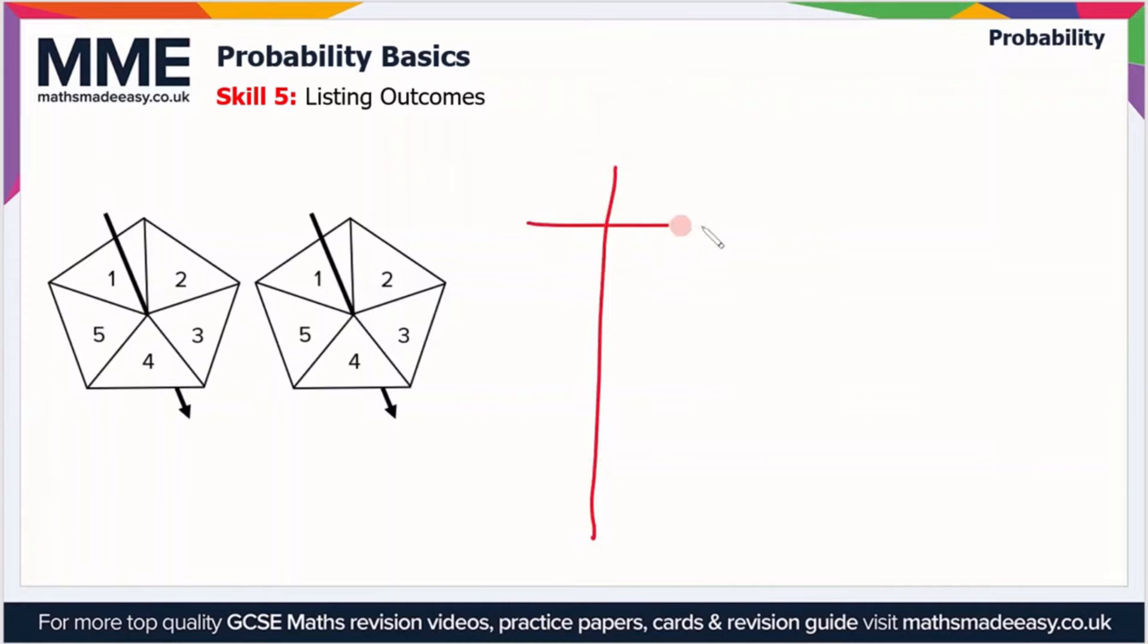So if along the top we have spinner one (that's the one on the left) and the one on the right is spinner two, I can have either one, two, three, four, or five for each one. So we can put them as the heading: one, two, three, four, and five, and the same down the other side.